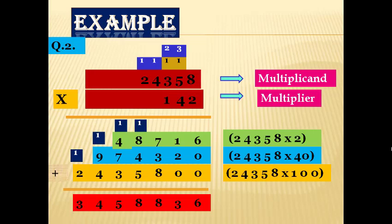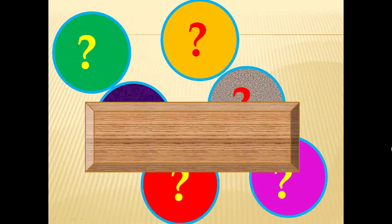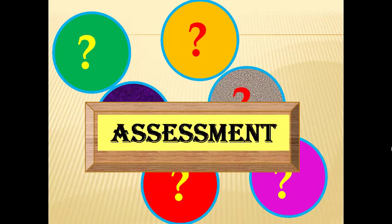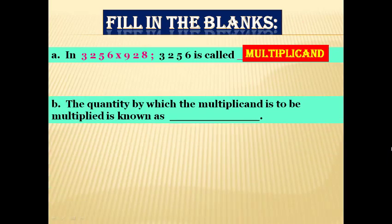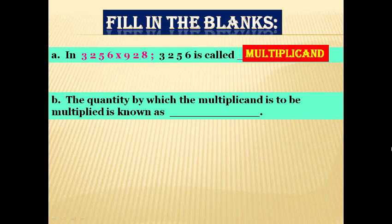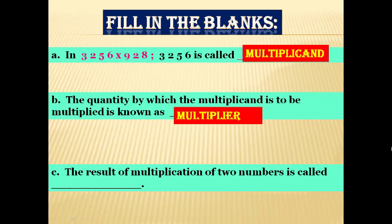Assessment — fill in the blanks. A: In this question, 3,256 is called ___. Answer: Multiplicand. B: The quantity by which the multiplicand is to be multiplied is known as ___. Answer: Multiplier. C: The result of multiplication of two numbers is called ___. Answer: Product.